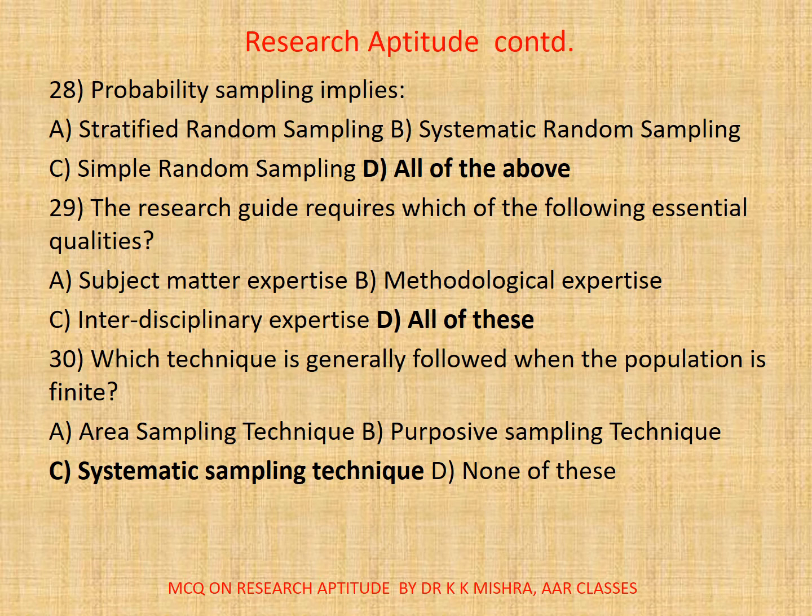Question thirty: Which technique is generally followed when the population is finite? A: Area sampling technique. B: Purposive sampling technique. C: Systematic sampling technique. D: None. The correct option is C: Systematic sampling technique.